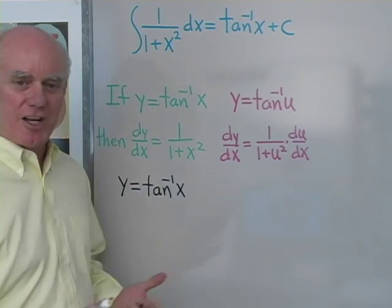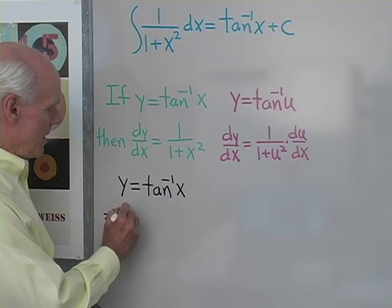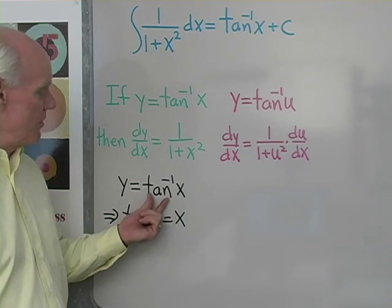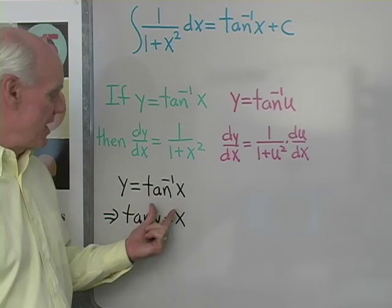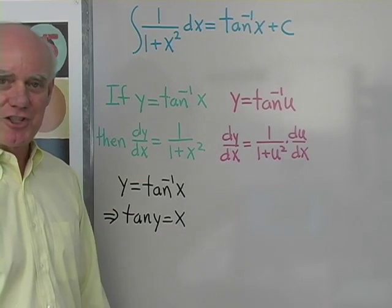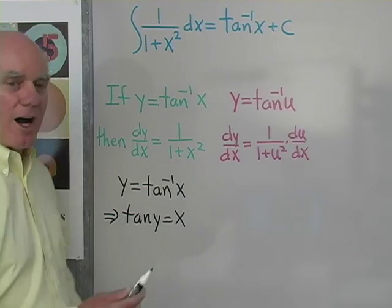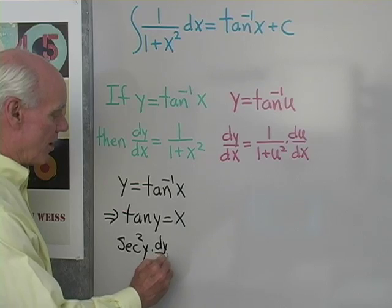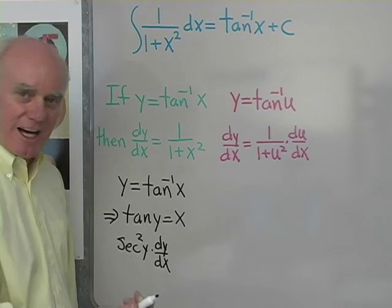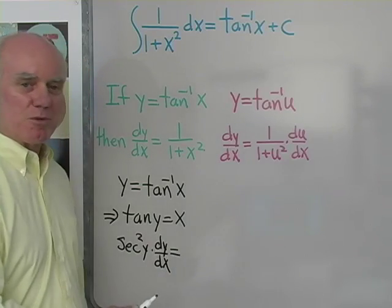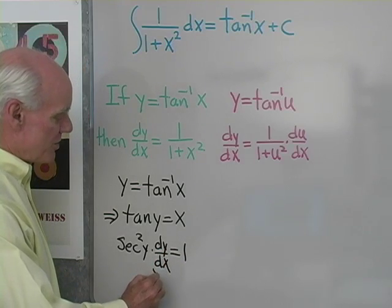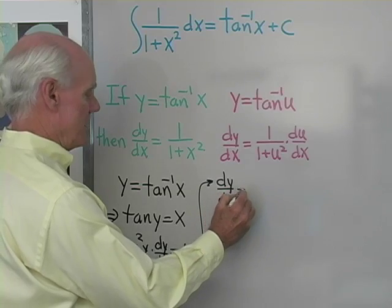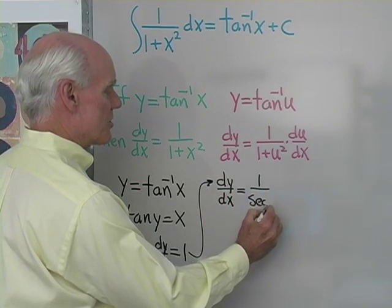If y equals inverse tangent x, then tangent y equals x. That's the relationship between inverse functions. Now I'll differentiate implicitly. The derivative of tangent y with respect to x is secant squared y times dy dx, and the derivative of x with respect to x is 1. Solving for dy dx gives 1 over secant squared y.